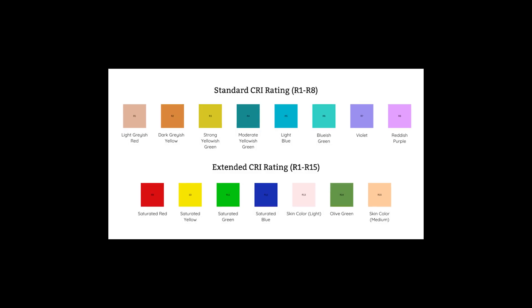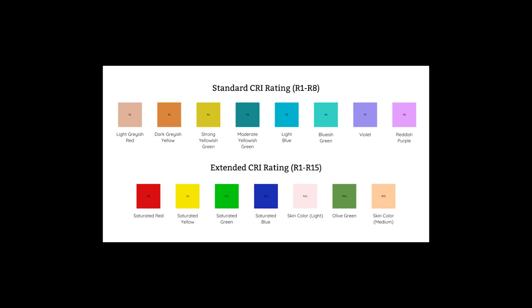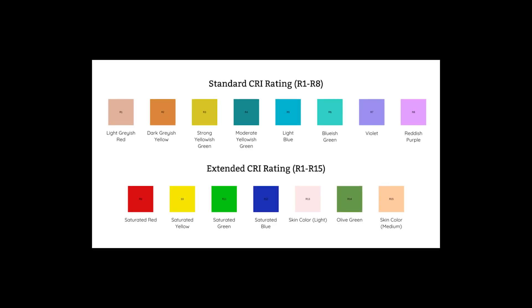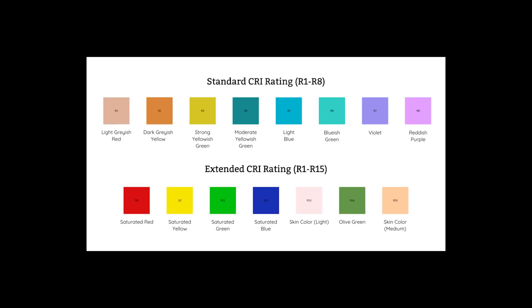The problems with this are that R1 through R8 don't include saturated red, deep blue, or skin tones. So a light can cheat the test, which is to say it can look good on paper, but make your tomato look brown.